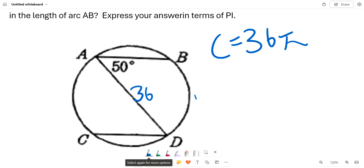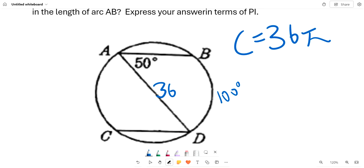And we also know that arc ABD is 100 degrees of measure, because it's an inscribed angle, so you just do 50 times 2.